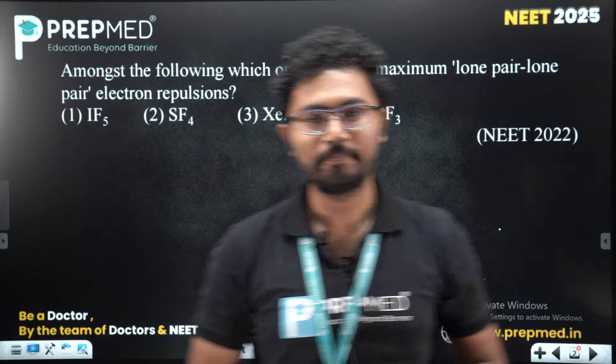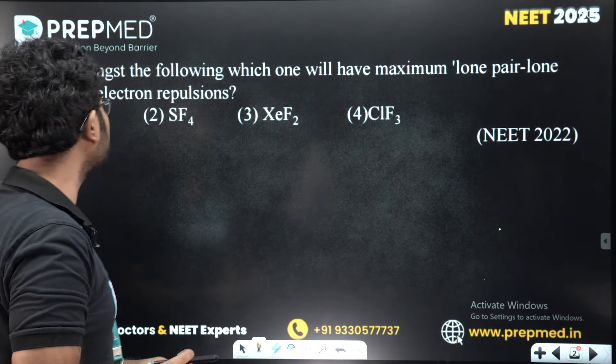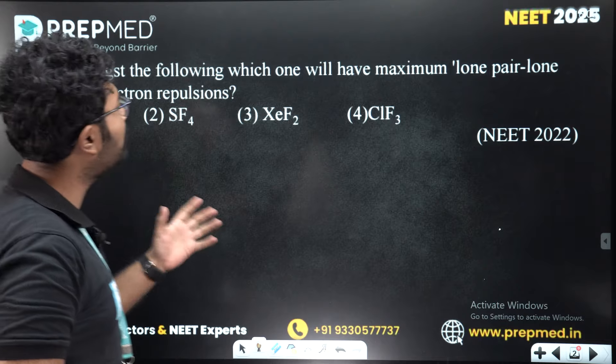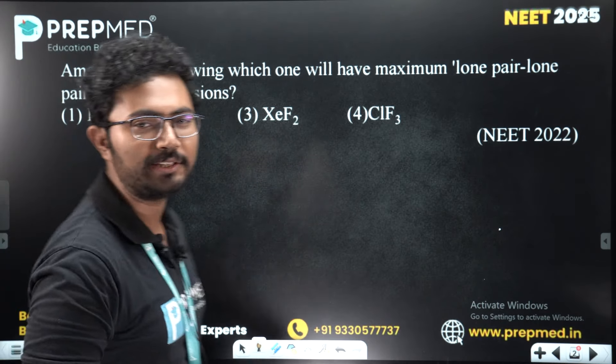Hello and welcome to PrepMed. Today we are going to solve an MCQ from NEET 2022. Amongst the following, which one will have maximum lone pair-lone pair electron repulsion?